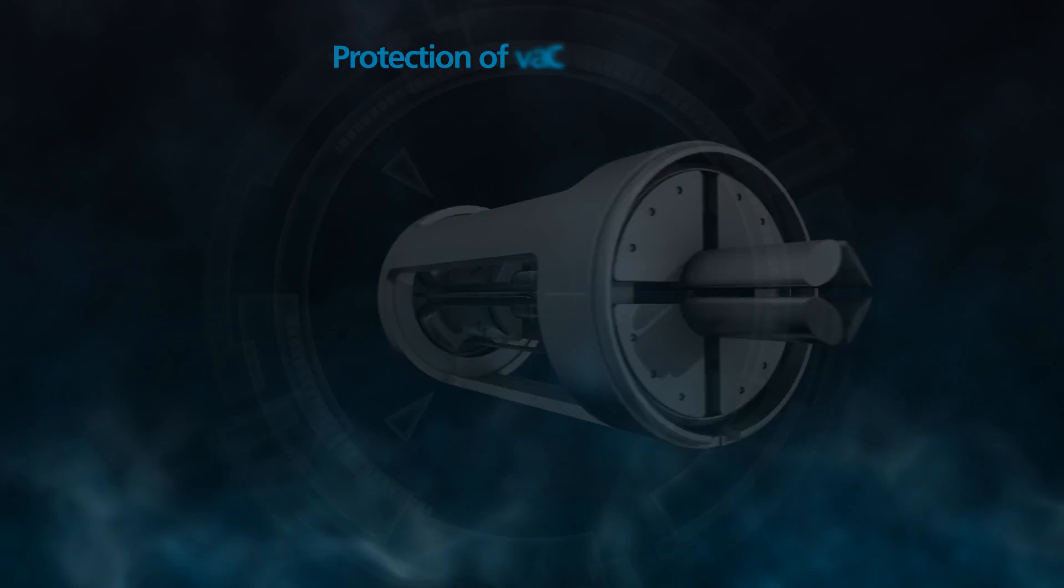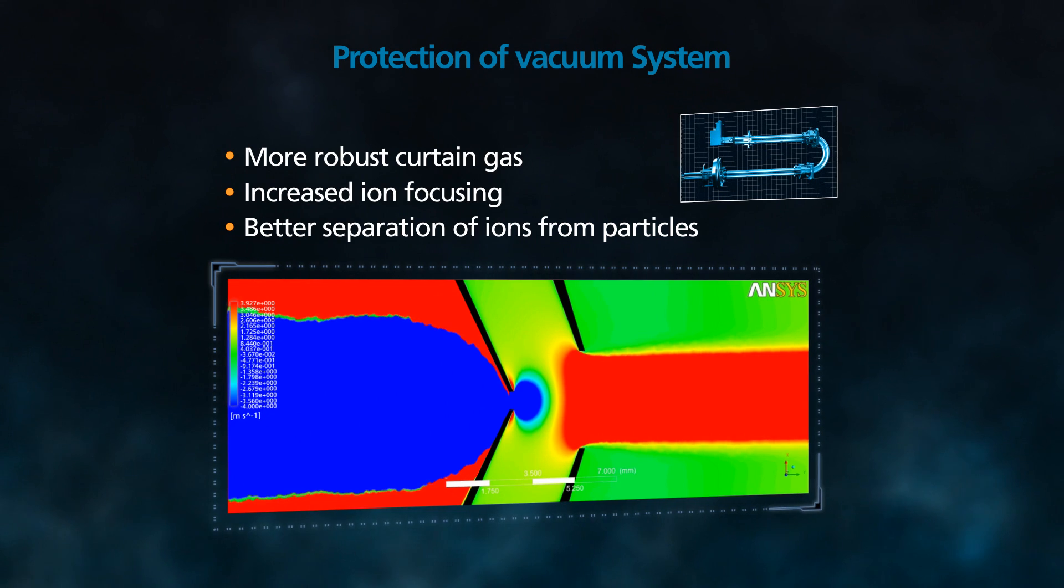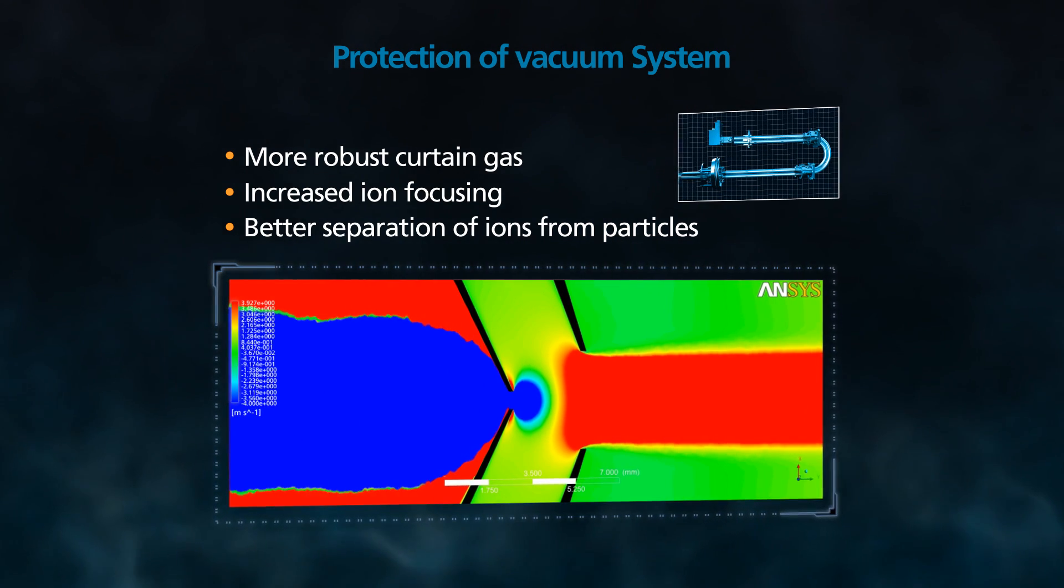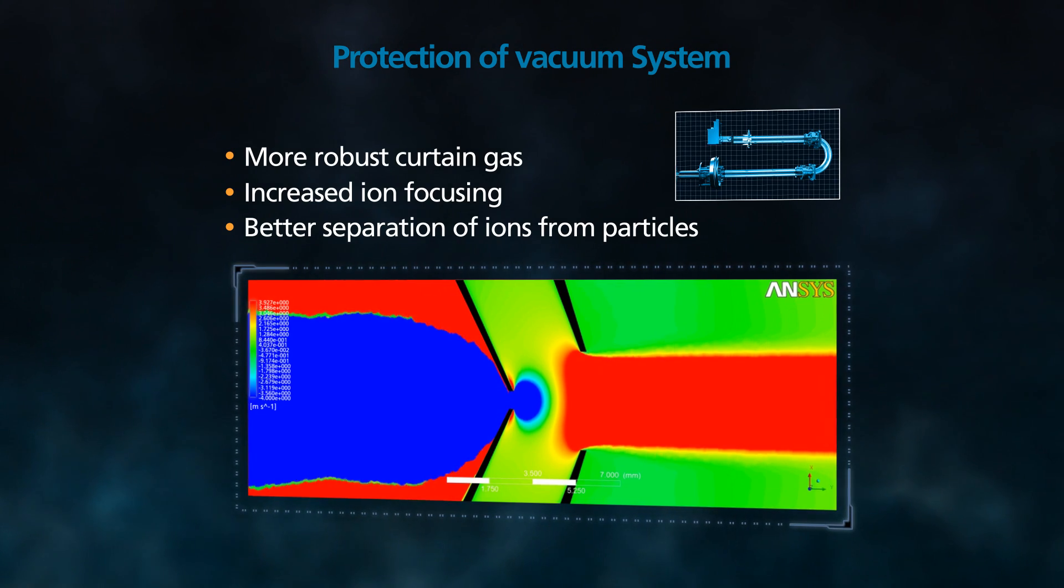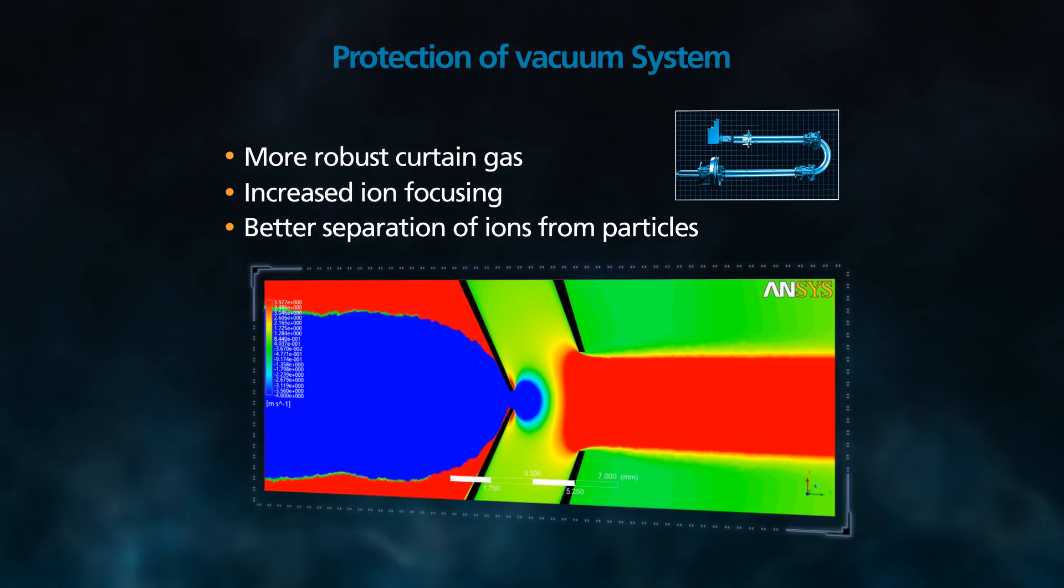The 6500 series also features a more robust curtain gas barrier that enhances the separation of ions from neutral particles and protects the ion rails from contamination more effectively.